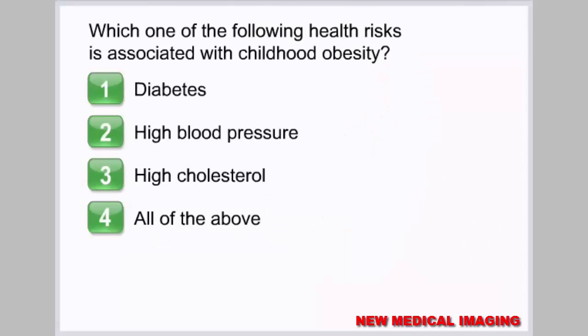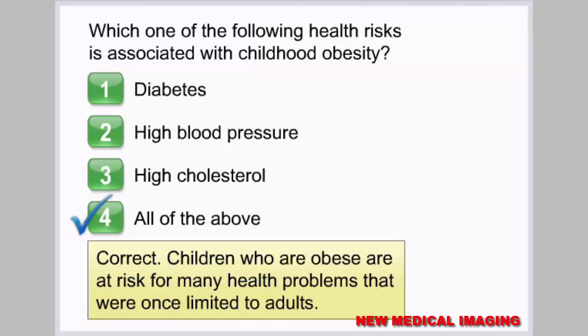Which one of the following health risks is associated with childhood obesity? 1. Diabetes. 2. High blood pressure. 3. High cholesterol. 4. All of the above. Correct. Children who are obese are at risk for many health problems that were once limited to adults.